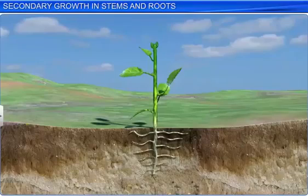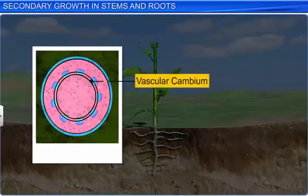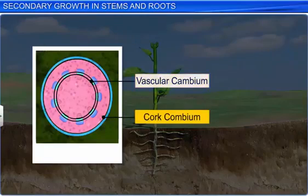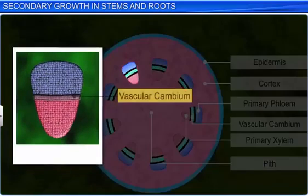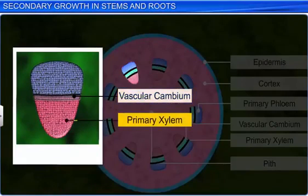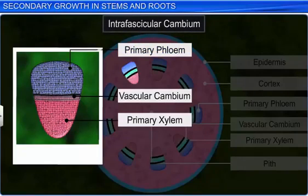In the stem, secondary growth takes place due to the activity of secondary meristems such as the vascular cambium and cork cambium. The vascular cambium, located between the primary xylem and primary phloem of a vascular bundle, is also known as the intrafascicular cambium.